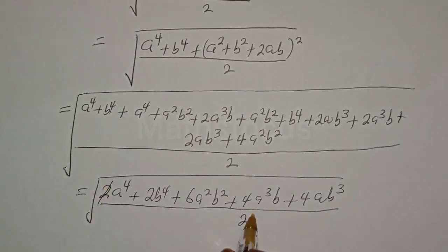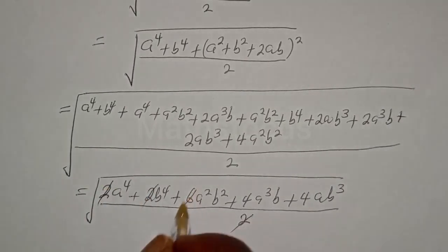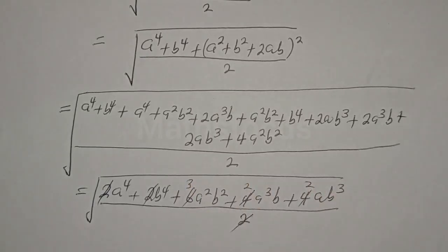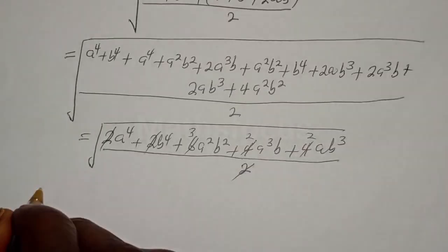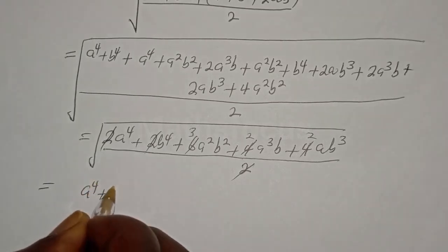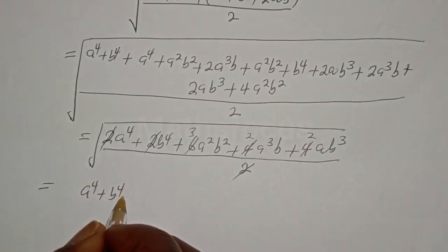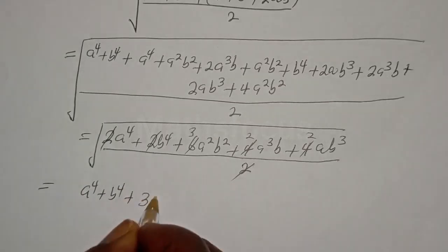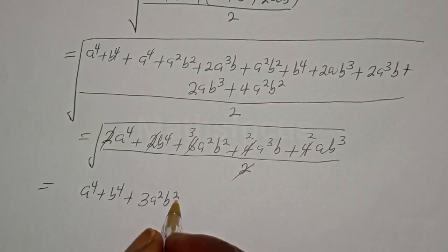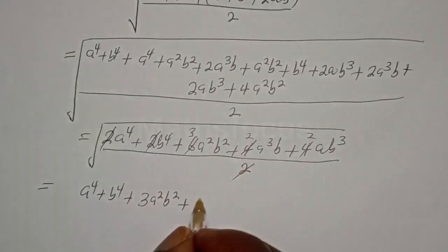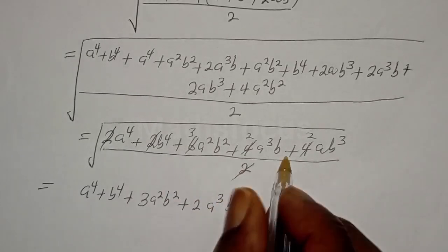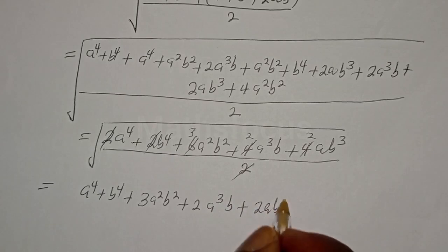Now we cancel the factor of 2 in the numerator and denominator. This leaves us with a⁴ plus b⁴ plus 3a²b² plus 2a³b plus 2ab³, then take the square root.